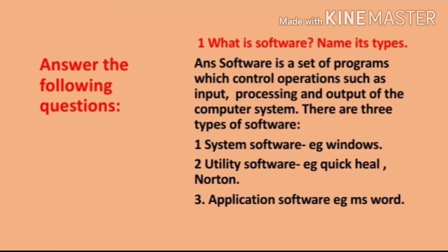Question number 1. What is software? Name its types. Software is a set of programs which control operations such as input, processing and output of the computer system.